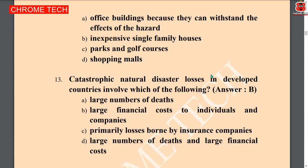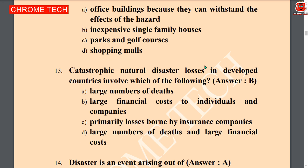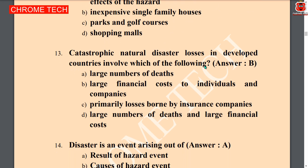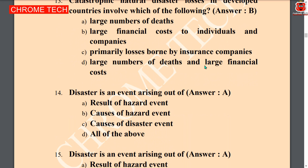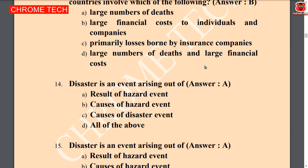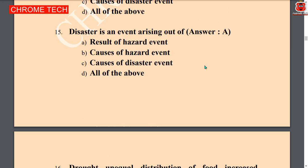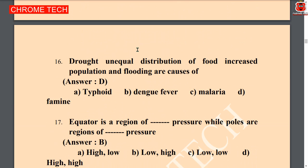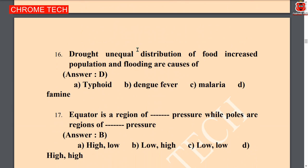Next question: catastrophic natural disaster losses in developed countries involve which of the following — large financial costs to individuals and companies. Option B is the correct answer. Next question: disaster is an event arising out of — result of a hazard event. Result of hazard event is the correct answer.